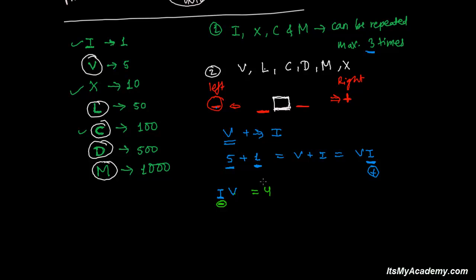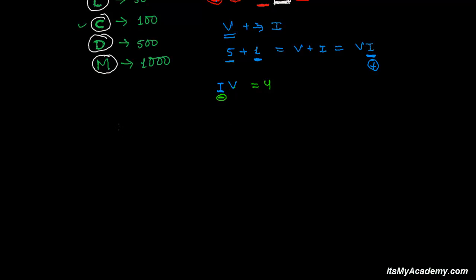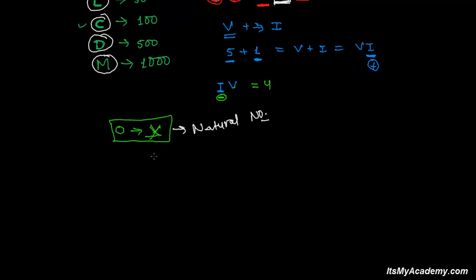First I am going to write numbers one to ten and tell you the rules with examples — so it will be very comfortable for you. Now in Roman numerals, for zero there is no place — we don't have zero. In Roman numerals we don't have a method of writing zero. We start from one, which means Roman numerals can only be used for natural numbers — not for whole numbers, integers, or negative integers.